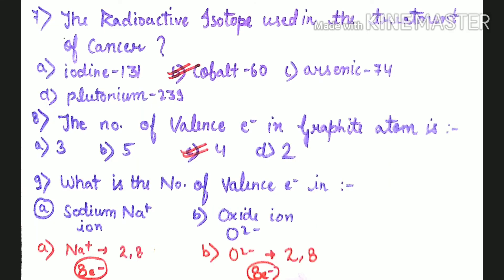Question number 7: The radioactive isotope used in the treatment of cancer. Options are iodine-131, cobalt-60, arsenic-74, plutonium-239. Cobalt-60 is used, so second option is correct.